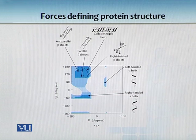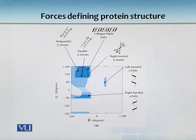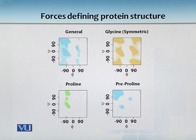Basically, by this graph what we can tell is that if we look at a protein structure, if you take a sequence, there is a likelihood that this particular sequence is going to fold into either an alpha helical structure or a beta sheet structure. But we have to take into account certain abnormalities, for example glycine.